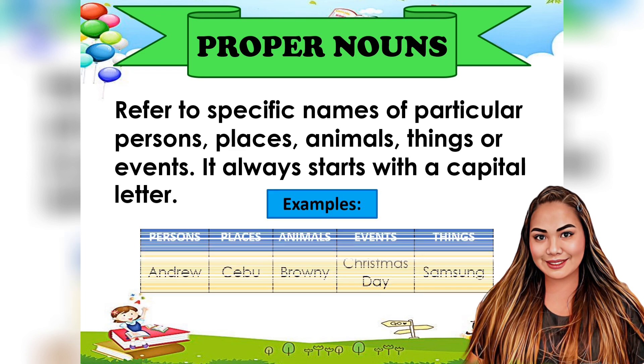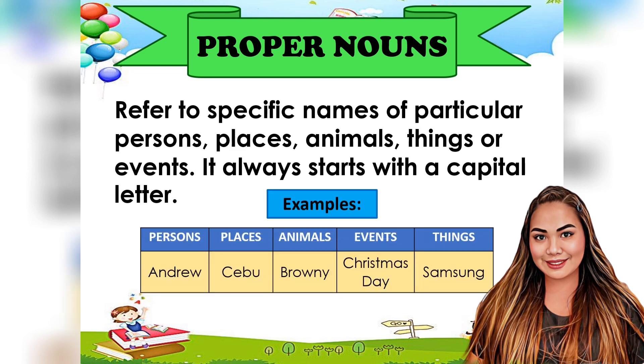Examples of proper nouns: Andrew, Cebu, Brownie, Christmas Day, Samsung.